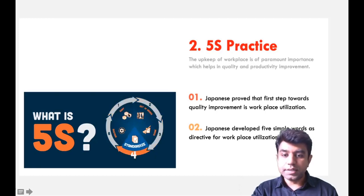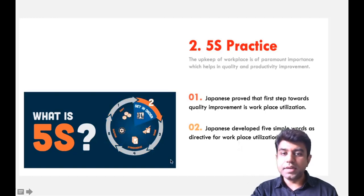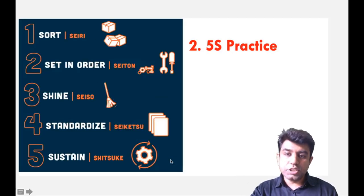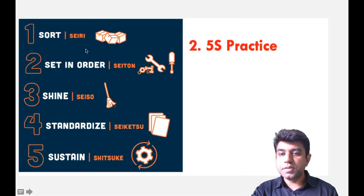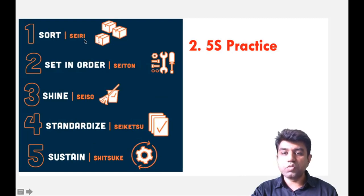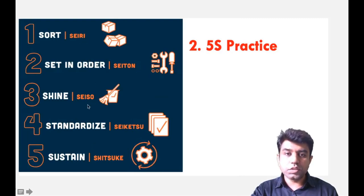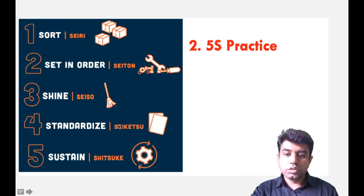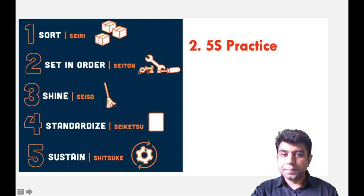These S-words were later converted into English. The initial Japanese terms were: Seiri, Seiton, Seiso, Seiketsu, and Shitsuke.